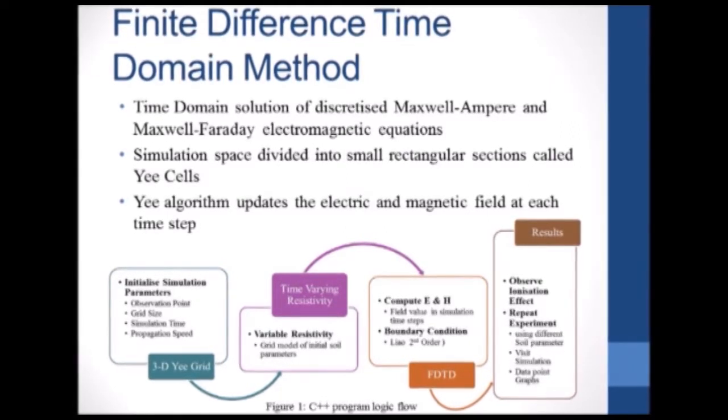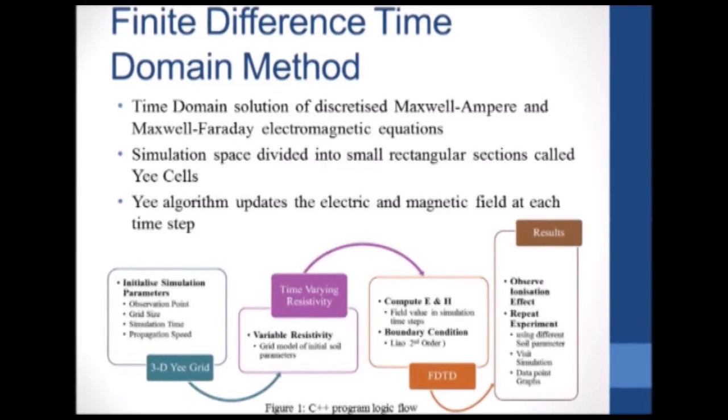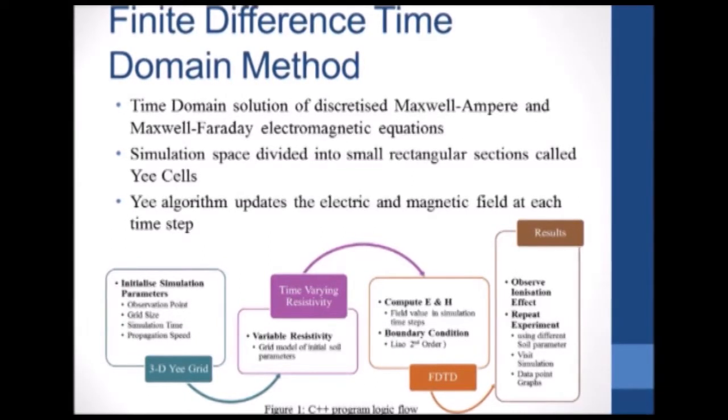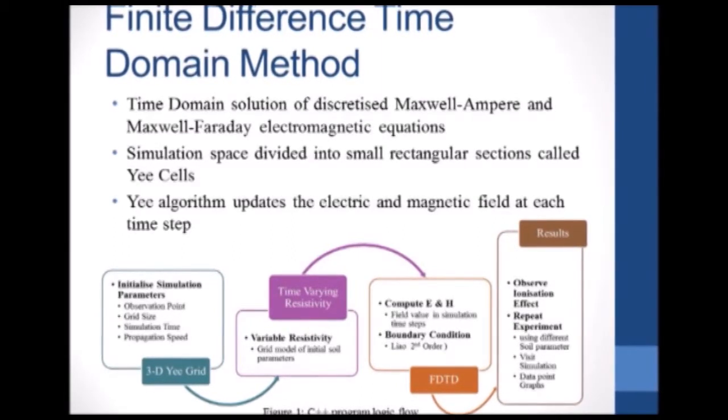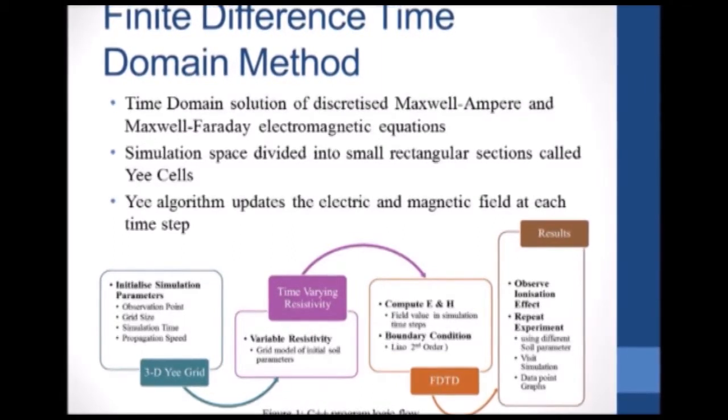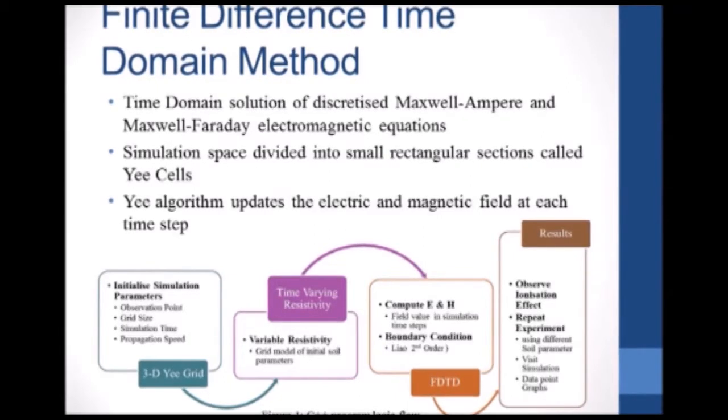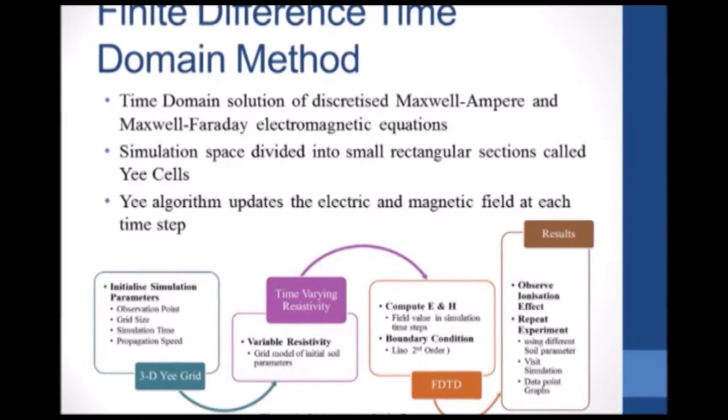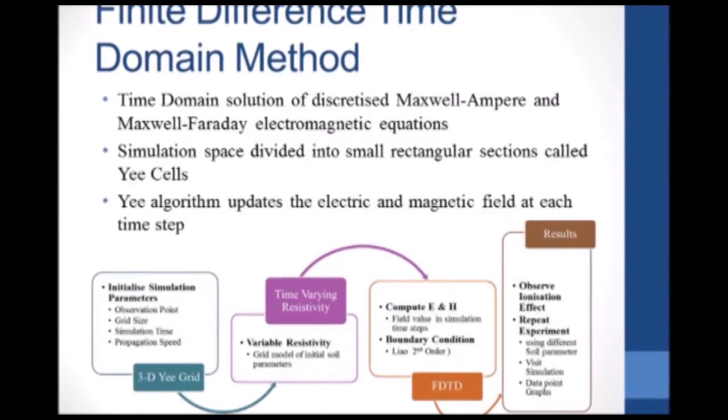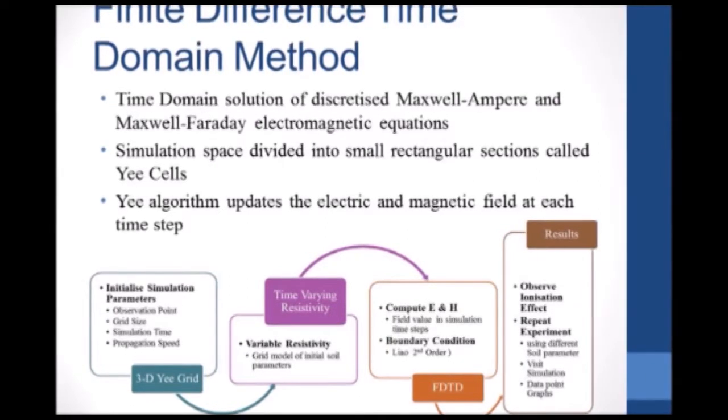Our flow goes as follows: initializing simulation parameters, then computing variable resistivity using time-varying resistivity model, then computing ENH field and applying the boundary conditions into the FDTD code, then obtaining results where we observe different behavior of soil ionization and deionization.